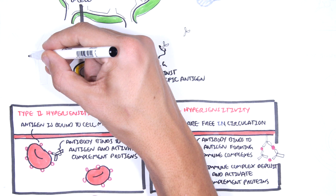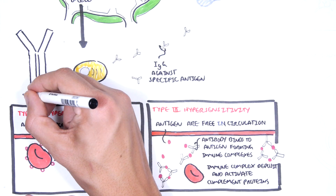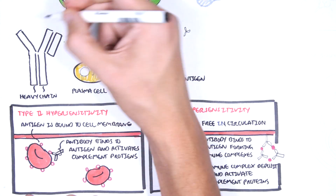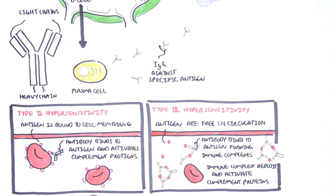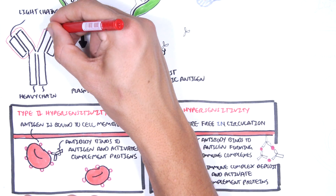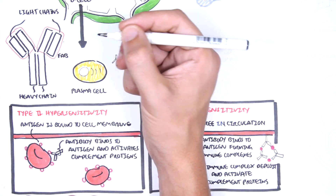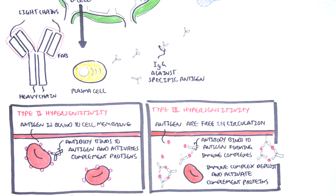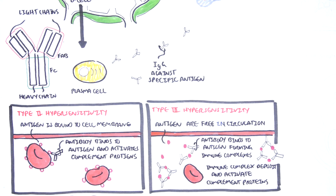The structure of a typical antibody produced by plasma cells is made up of inner heavy chains and outer light chains. The top part is the FAB region, which binds to the actual antigen. The bottom part is the FC region, which acts as a bridge that activates the complement proteins.